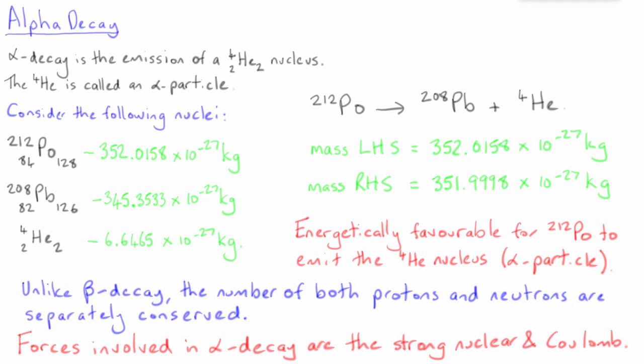We have now looked at both alpha and beta decay. These are two of the three forms of nuclear decay that are named after the first three letters of the Greek alphabet. So let us now talk about the third one, gamma decay.